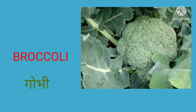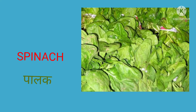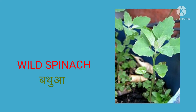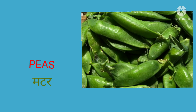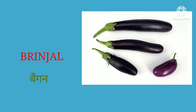This is broccoli, in Hindi it's called gobi. This is spinach, in Hindi it's called palak. This is wild spinach, in Hindi it's called bathua. This is green onion, in Hindi it's called pyaaz. This is peas, in Hindi it's called matar. This is brinjal, in Hindi it's called baingan.